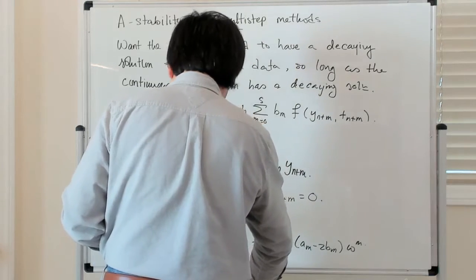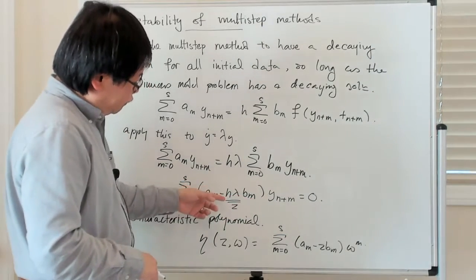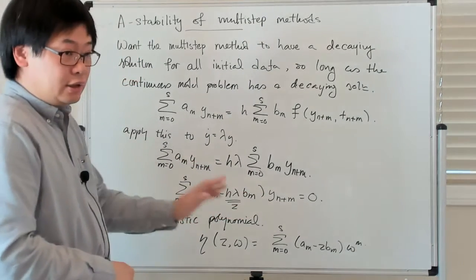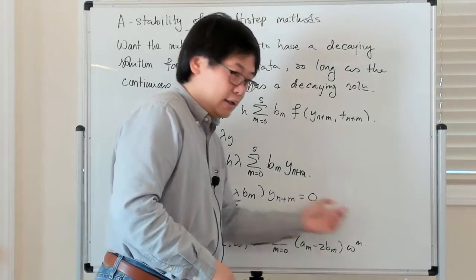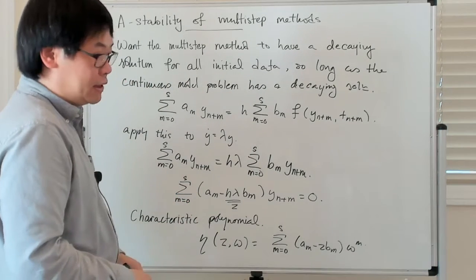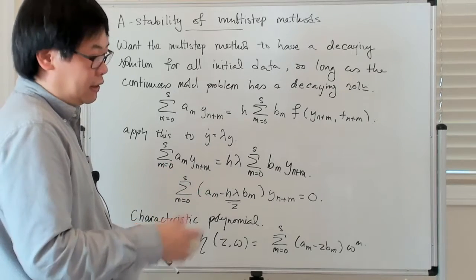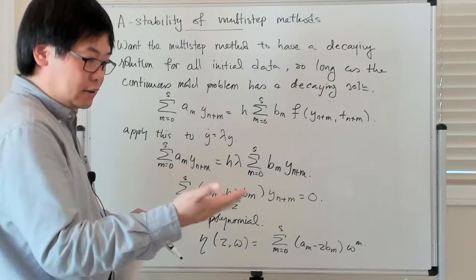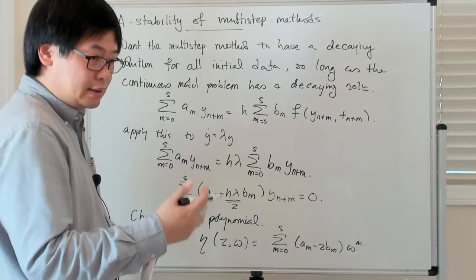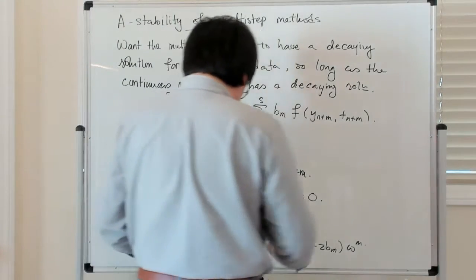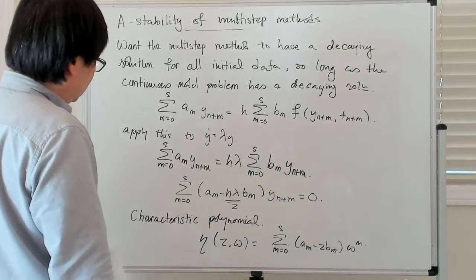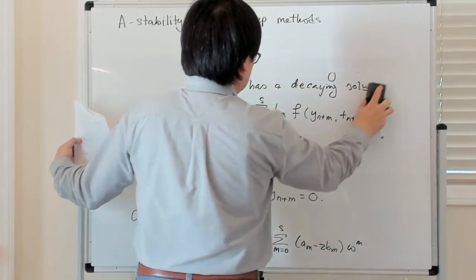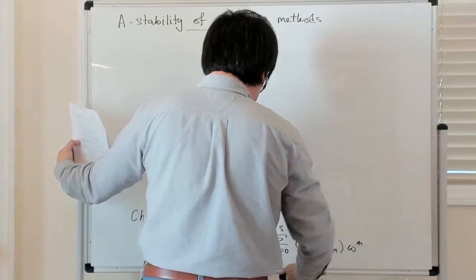Let me briefly remind you of the solution theory for linear constant coefficient difference equations, and then we can say something about what that implies for A-stability of multi-step methods. If you fix h and λ, this becomes a constant coefficient linear homogeneous difference equation. The solution theory is related to the roots of the characteristic polynomial. If λ is a root, one of the solution sequences is something like λ^0, λ^1, λ^2, λ^3, and so on. If there's multiplicity, there's a secular growth term which gets included.